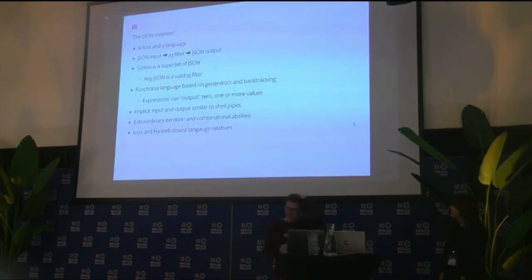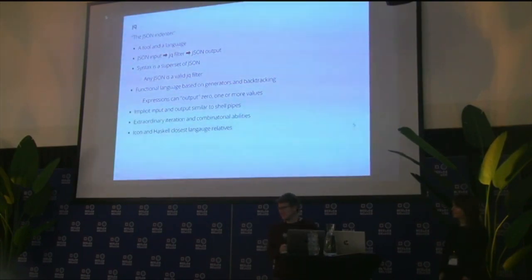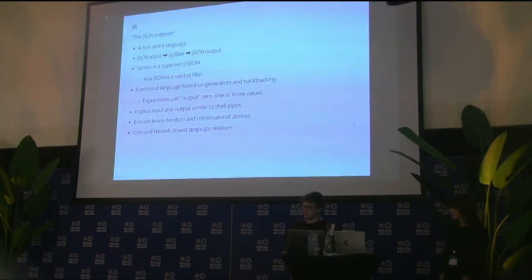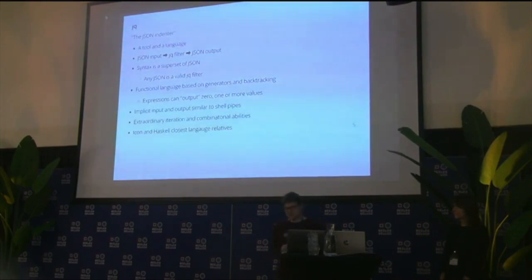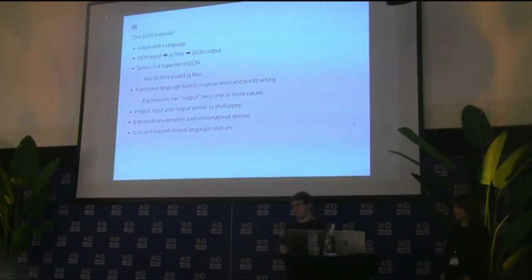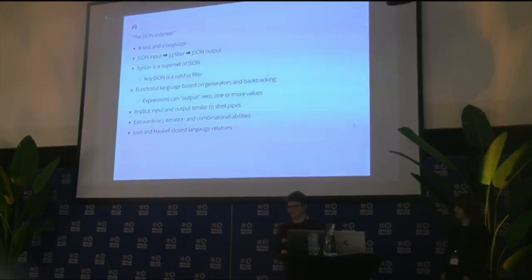I can talk a bit about JQ. Most people have seen it at least for indenting JSON — you run JQ on a JSON file and it nicely indents it. But JQ is actually a tool and also a programming language. It takes JSON as input, runs a JQ program — or 'filter' as they call it — and gives you JSON back. The dot you see in JQ is just an identity function.